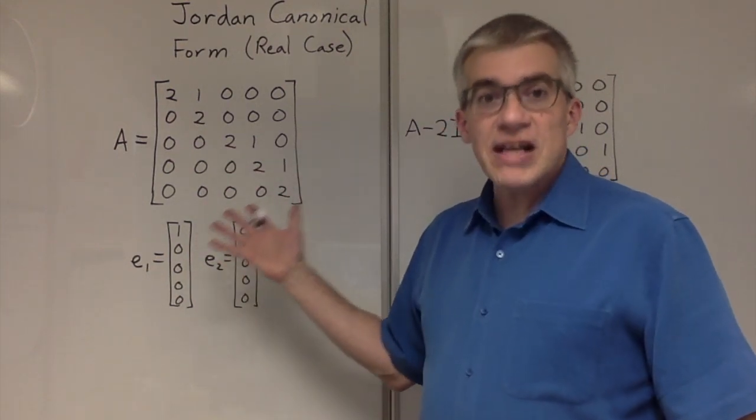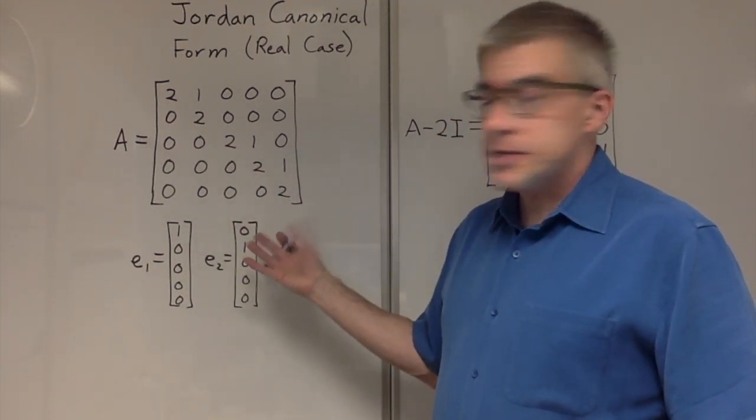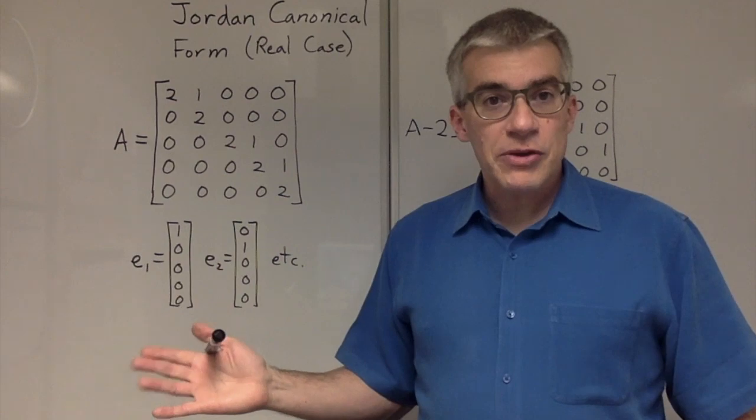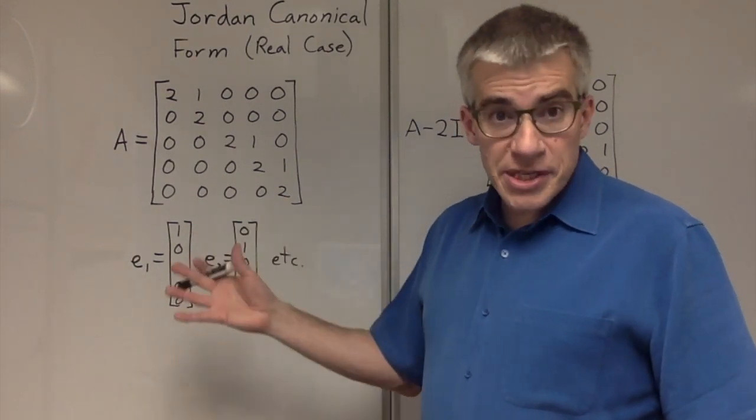This matrix has eigenvalue 2, 5 copies, but does not have 5 eigenvectors. What eigenvectors does it have?